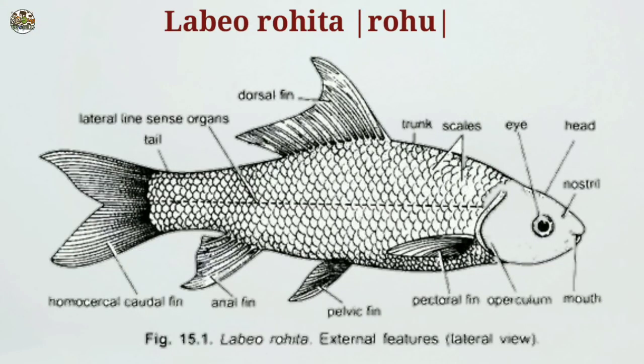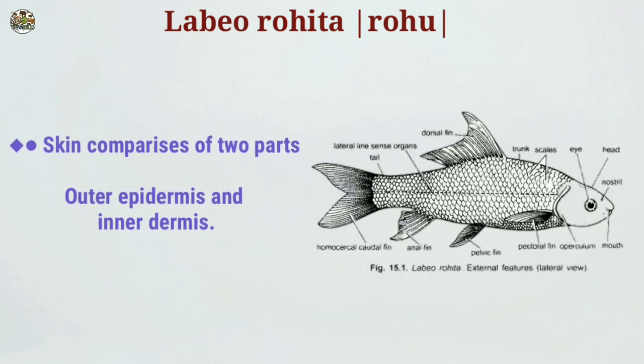The trunk and tail are covered by thin, rounded, overlapping dermal cycloid scales. The ring-like markings on the scale, called circuli, are used to determine the age of the fish. The skin comprises two layers: outer epidermis and inner dermis.